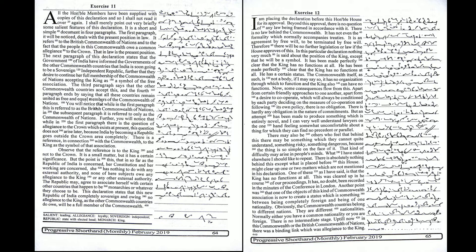The first paragraph deals with the present position in law. It refers to the British Commonwealth of Nations and to the fact that the people in this Commonwealth owe a common allegiance to the crown. That in law is the present position.